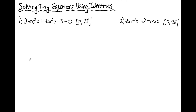The biggest hint that I'm going to have to use an identity — rather than just using order of operations backwards, factoring, or something easier — is that I have more than one trig function represented in my equation. Here I notice that I have a secant squared and a tan squared, so my goal is going to be to get the equation entirely in terms of one trig function.